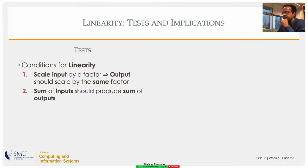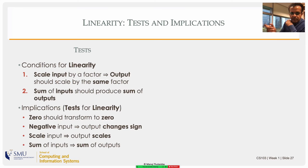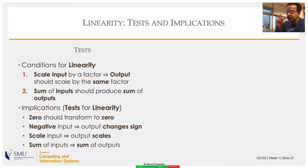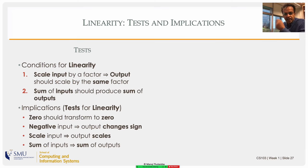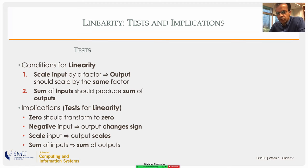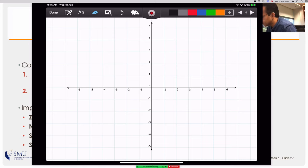The implications are interesting: zero should always transform to zero — even when you move on to complex objects like vectors, a zero vector should transform to a zero vector. Also, a negative input should give a negative output: f(-x) = -f(x), because you're multiplying by -1. The order to apply tests: first, put zero in and see if you get zero out — if you don't, stop right there. If you do get zero, you might still fail one of the other conditions. Let me show an example where zero maps to zero but it's still not linear.